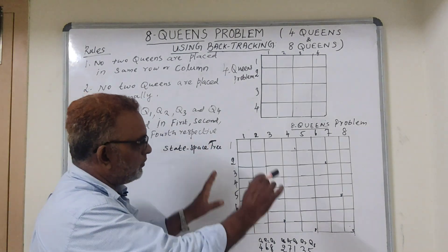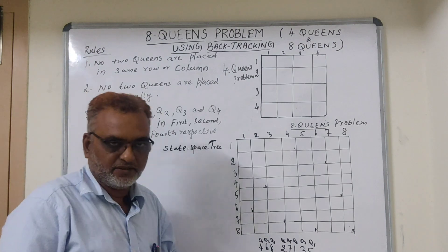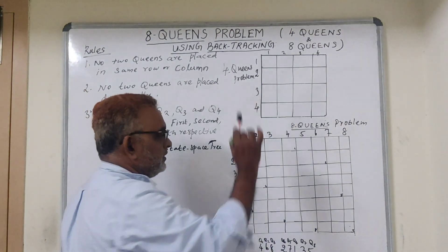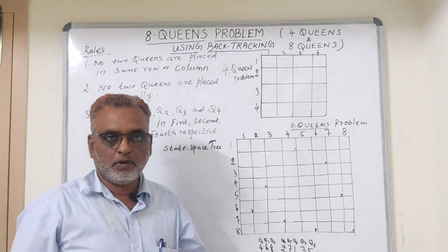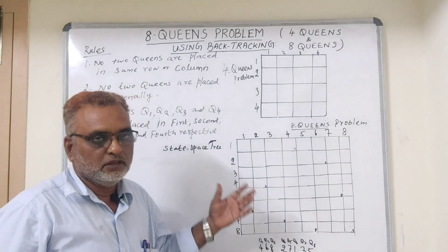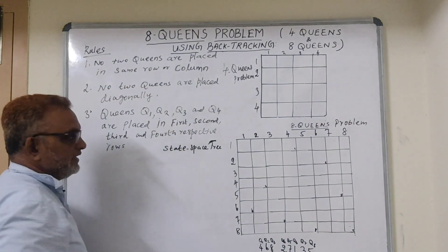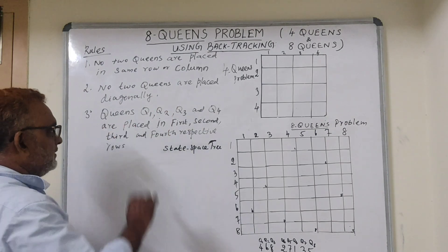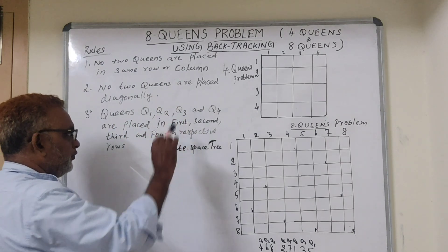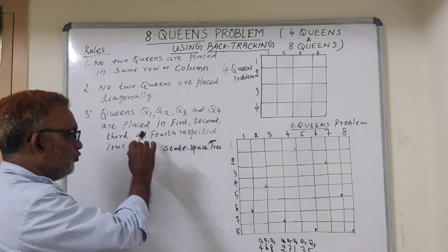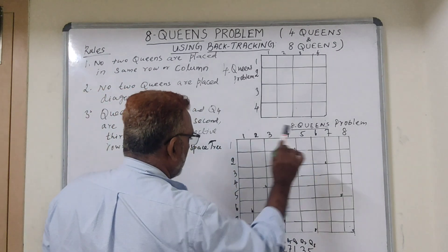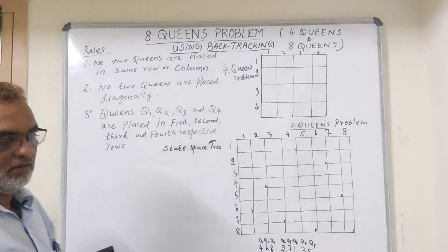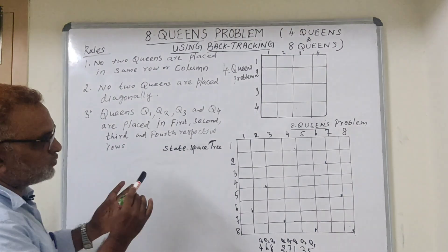The problem can be solved by creating the state space tree. Since the 64-cell board makes a very large tree, I am considering the 4 queens problem instead. The same logic can then be applied to the 8 queens problem. The rules are: no two queens are placed in the same row or column, no two queens are placed diagonally, and queens Q1, Q2, Q3, Q4 are placed in rows 1, 2, 3, and 4 respectively.